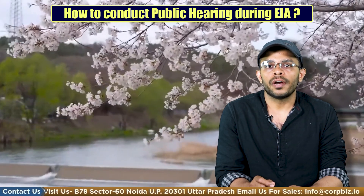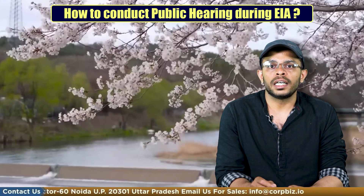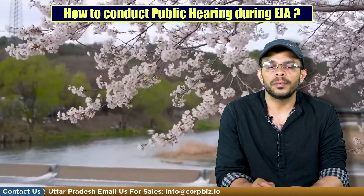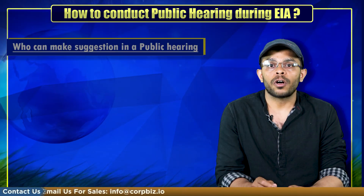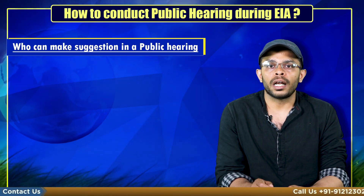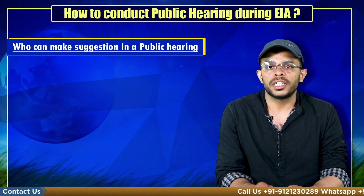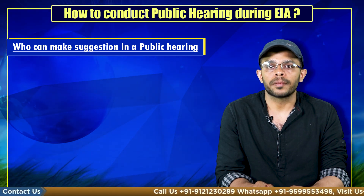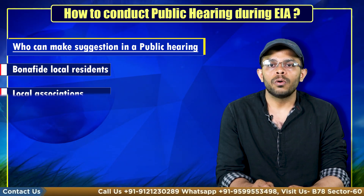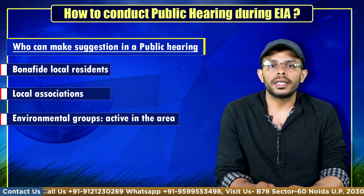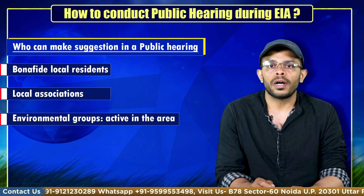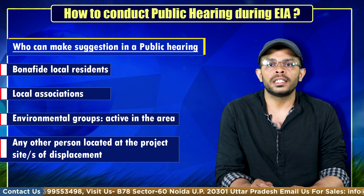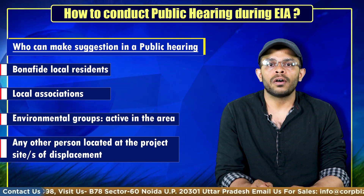Anyone likely to be affected by the proposed project is entitled to access the executive summary of the EIA. The following people are allowed to make a written or oral suggestion to the SPCB at the time of public hearing: bonafide local residents, local associations, environmental groups active in the area, and any other person located at the project site of displacement.